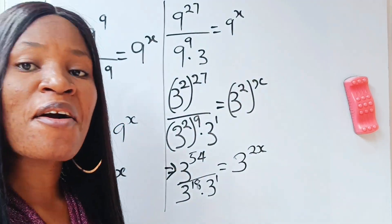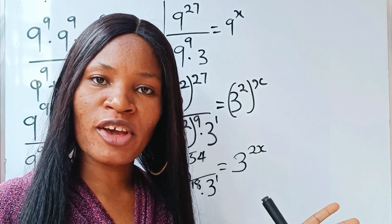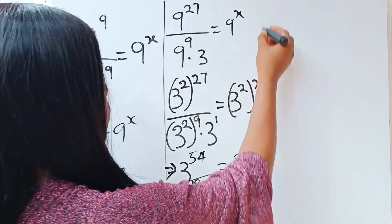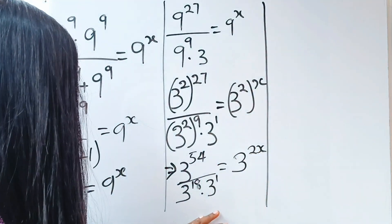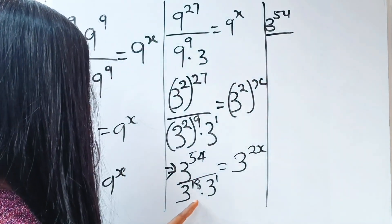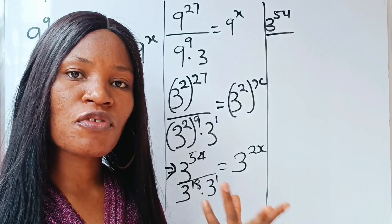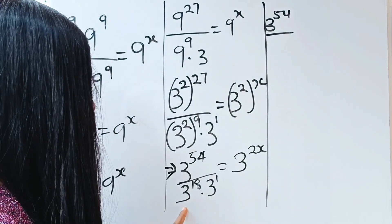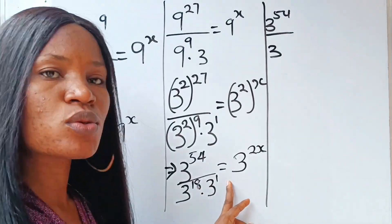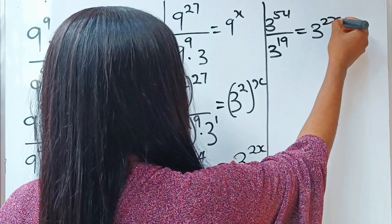If this is the first time you are coming across this channel, please subscribe and hit the notification bell so that you will be notified anytime I upload a new video. Thank you so much. Now this is what we have at this point: 3 to the power of 54. We have the same base 3 and 3 in the denominator, so we apply the first law of indices — pick the base 3 and add the powers: 18 plus 1 gives us 19. So 3 to the power of 54 divided by 3 to the power of 19 is equal to 3 to the power of 2x.